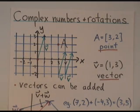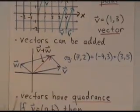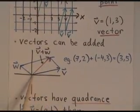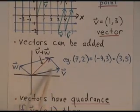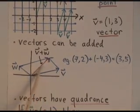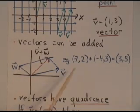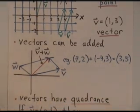There's two things that vectors have that points don't have. First of all, vectors can be added. Here's a vector v, there's a vector w. We can add them by putting them together, like that, to get the sum v plus w. And in coordinates, it's just component-wise addition.